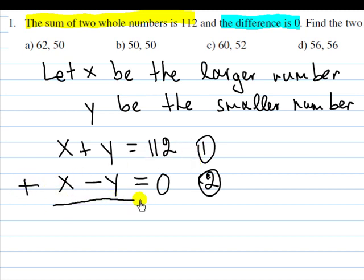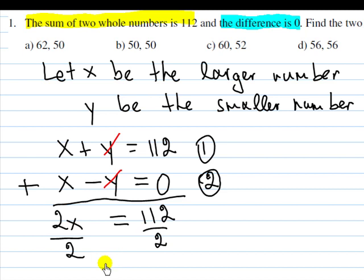Let's add those two together. x plus x is 2x and y plus negative y will cancel out, so it's 0. Then 112 plus 0 is of course 112. Now we can divide both sides by 2 and we will get x equals 112 divided by 2 is 56.